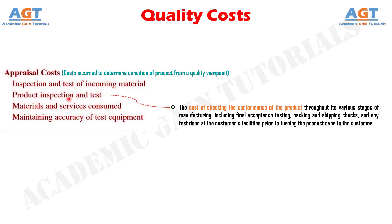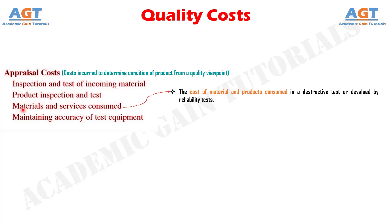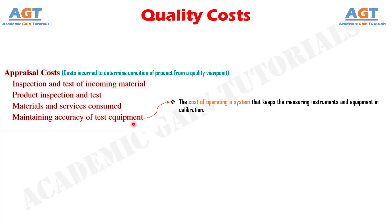Number 2, product inspection and test — the cost of checking the conformance of the product throughout its various stages of manufacturing, including final acceptance testing, packing and shipping checks, any test done at the customer's facility, life testing, environmental testing, and reliability testing. Number 3, materials and services consumed — the cost of material and products consumed in a destructive test or devalued by reliability tests. And number 4, maintaining accuracy of test equipment — the cost of operating a system that keeps the measuring instruments and equipment in calibration.